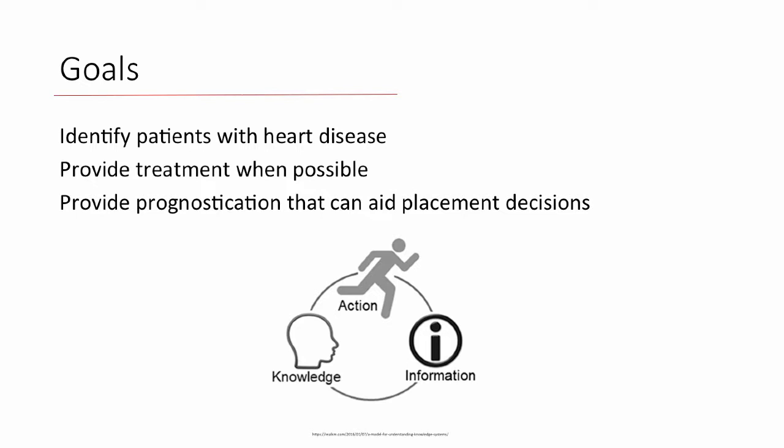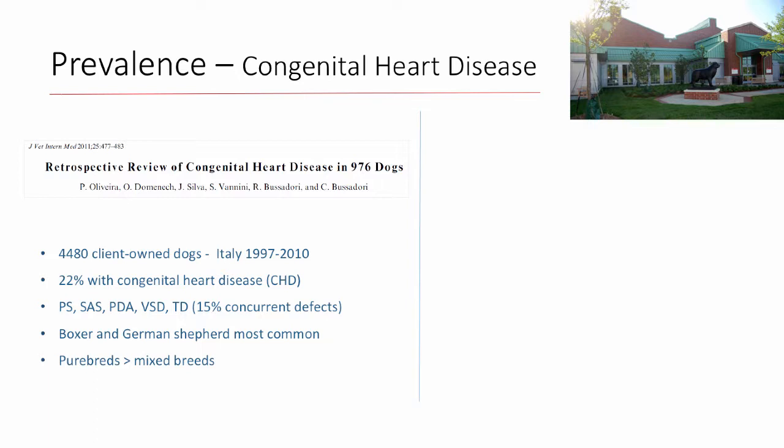The first thing I want to do is go over some prevalence studies. This was a study of nearly a thousand dogs in 2011 from Italy, in a referral setting with about 4,500 dogs. About 22 percent of that population had congenital heart disease, and 15 percent of those dogs had more than one defect. That's a pretty high percentage compared to some other populations, but this is a referral-based hospital.